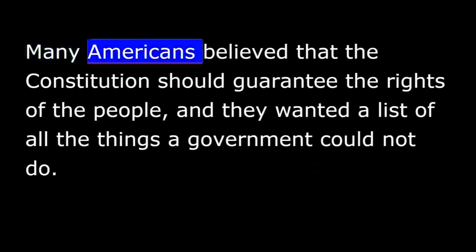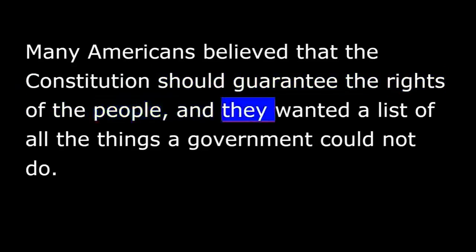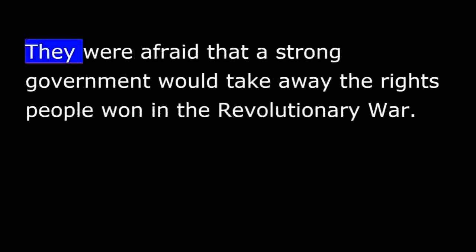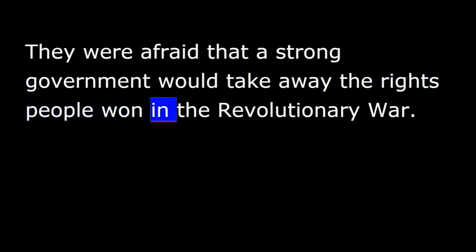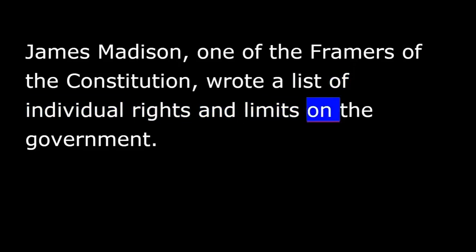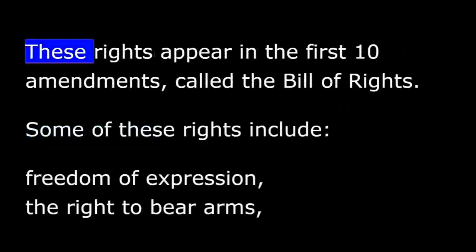Many Americans believed that the Constitution should guarantee the rights of the people, and they wanted a list of all the things a government could not do. They were afraid that a strong government would take away the rights people won in the Revolutionary War. James Madison, one of the framers of the Constitution, wrote a list of individual rights and limits on the government.